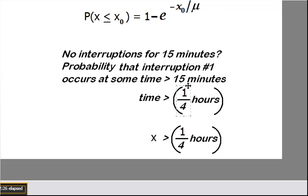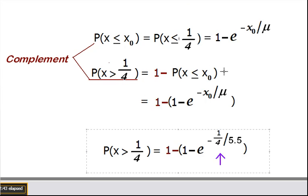So there's no interruptions or maybe you could say the time between interruption number one or interruption number two is greater than 15. So the time has to be greater than, and I've converted this to one-fourth hours. Or we could say that x has to be greater than one-fourth hours.